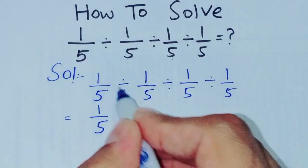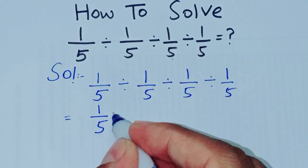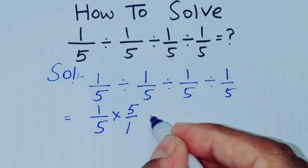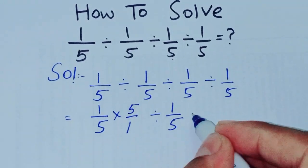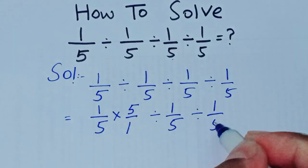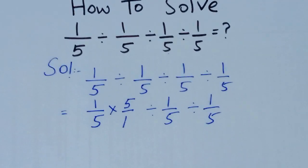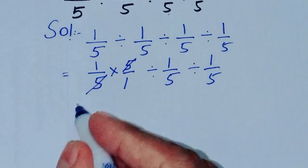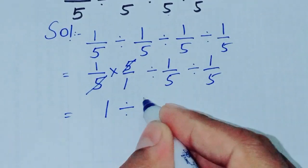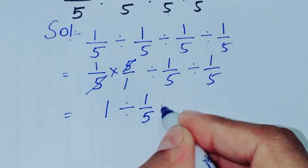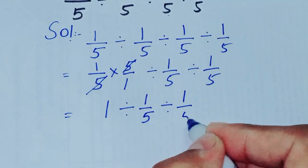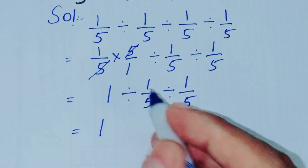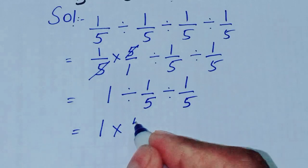So both are cancelled. 1 ÷ 1/5 ÷ 1/5. Divide changes into multiply, so 5/1 ÷ 1/5.